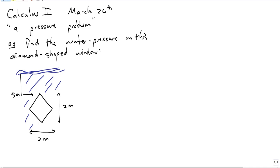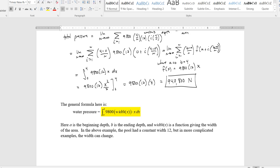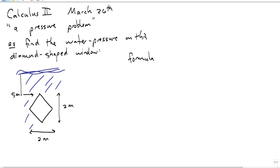We want to know the total water pressure on this window. The formula, as I have in the notes over here, is the integral from a to b of 9,800 times the width times x dx. That's 9.8 meters per second squared, the acceleration due to gravity, times 1,000, which is 1,000 kilograms per cubic meter of water, times the width of x times x dx. x is the depth, and the width depends on it.